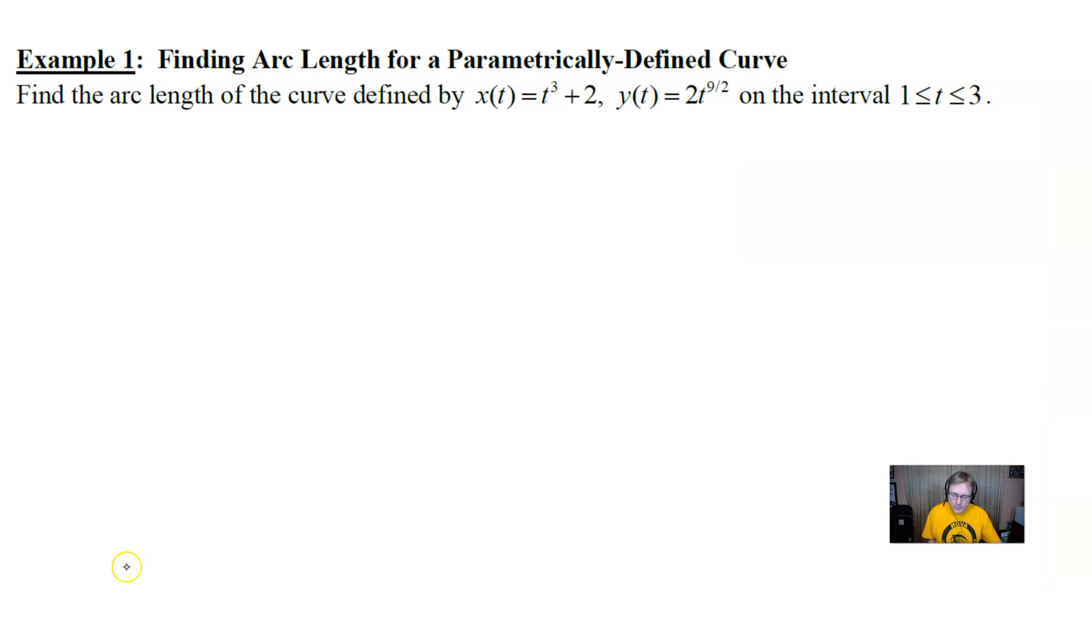In example one, we're asked to find the arc length of the curve defined by x(t) = t^3 + 2 and y(t) = 2t^(9/2), and we're going to use the interval 1 to 3. And again, I know it's very easy to look at this and think, boy, those are some strange exponents, especially that 9/2 power. If you remember a little bit from topic 8.13, some of these equations have to be written a little strangely in order for them to be solvable by hand, because whenever you're integrating with this square root expression, boy do we have the potential for all sorts of bad things to happen because it could be difficult to integrate. Hopefully this one's not as such.